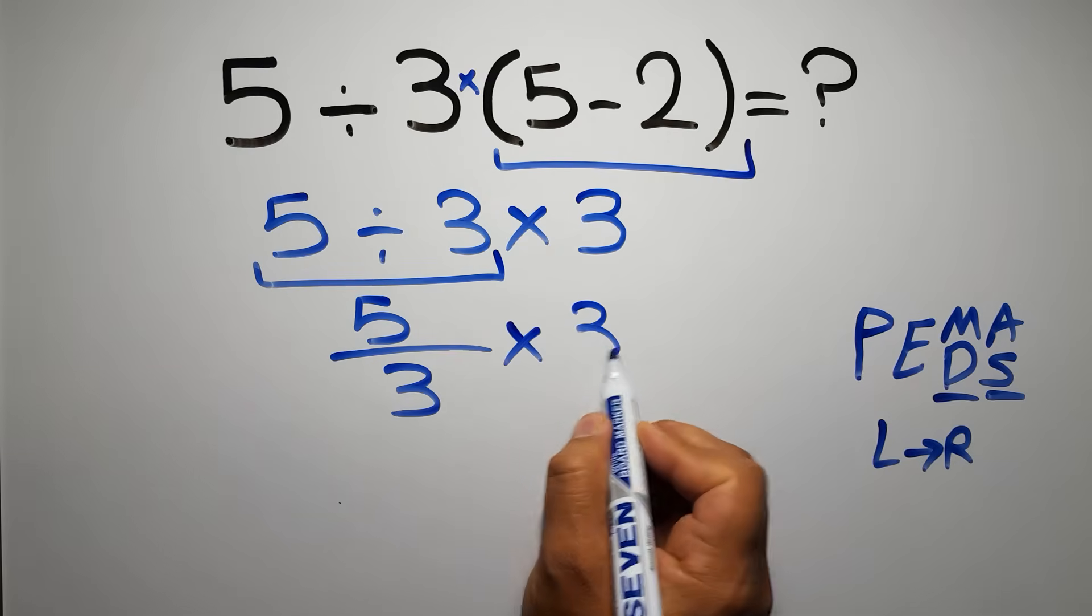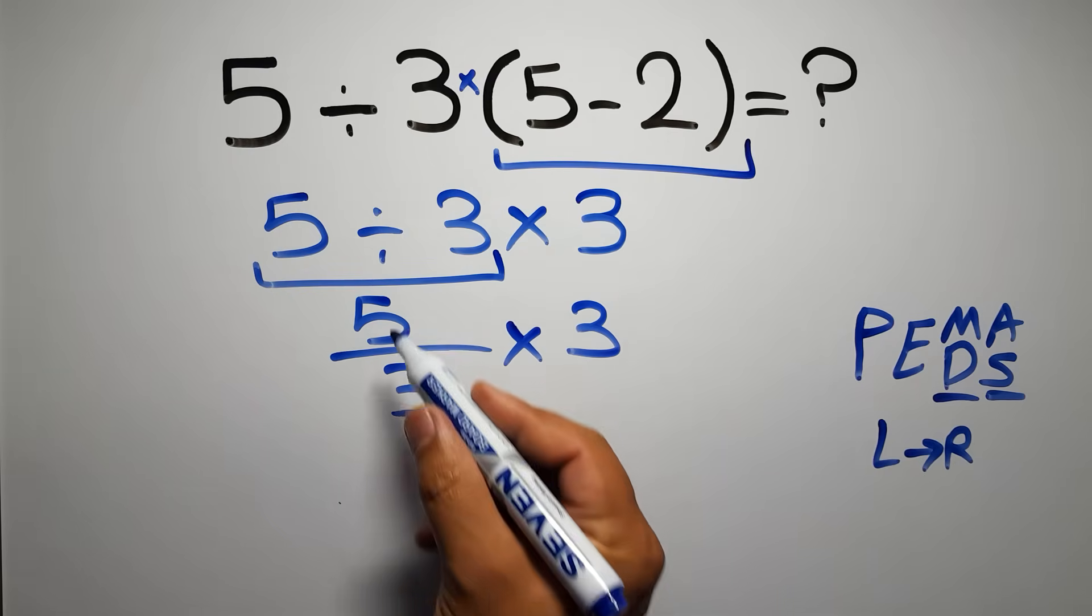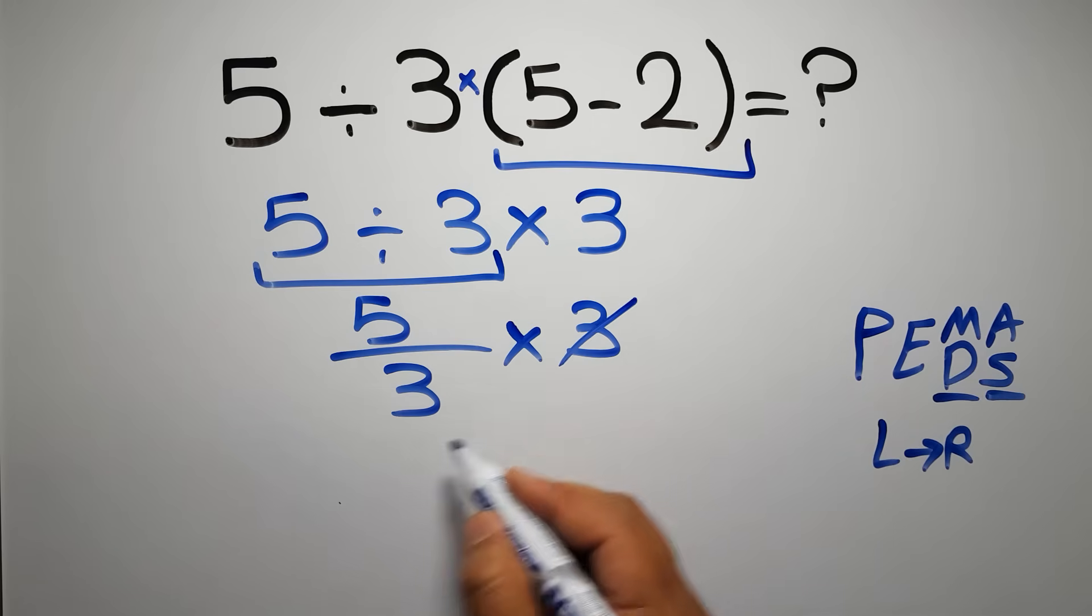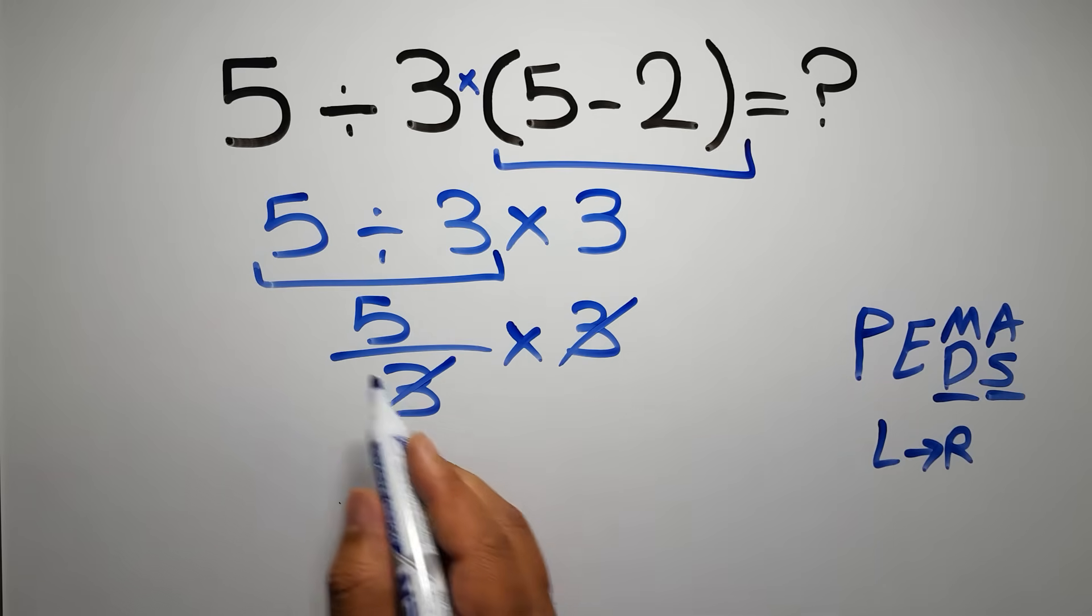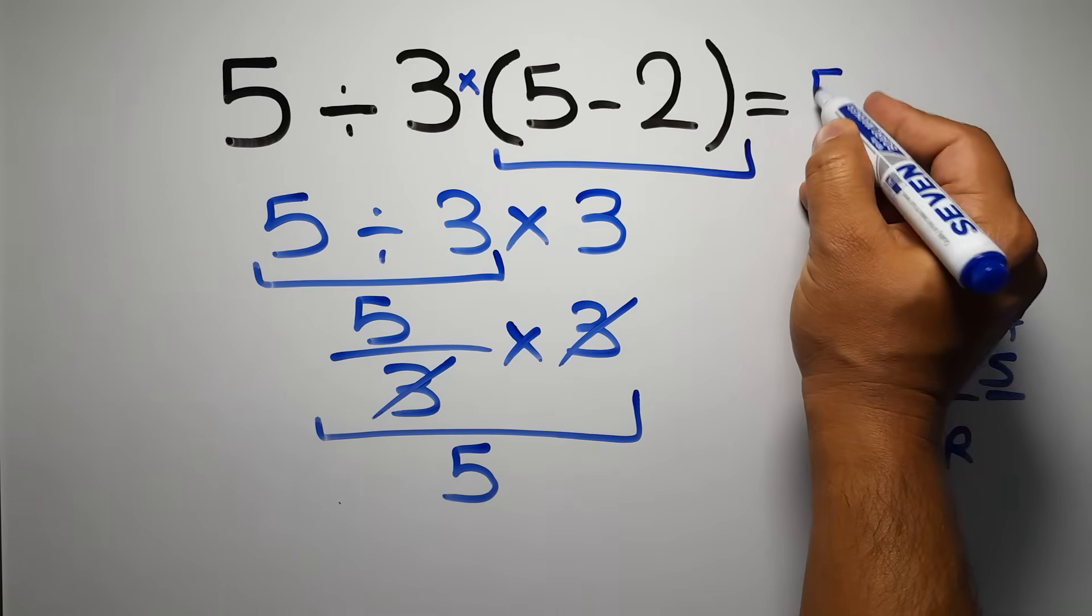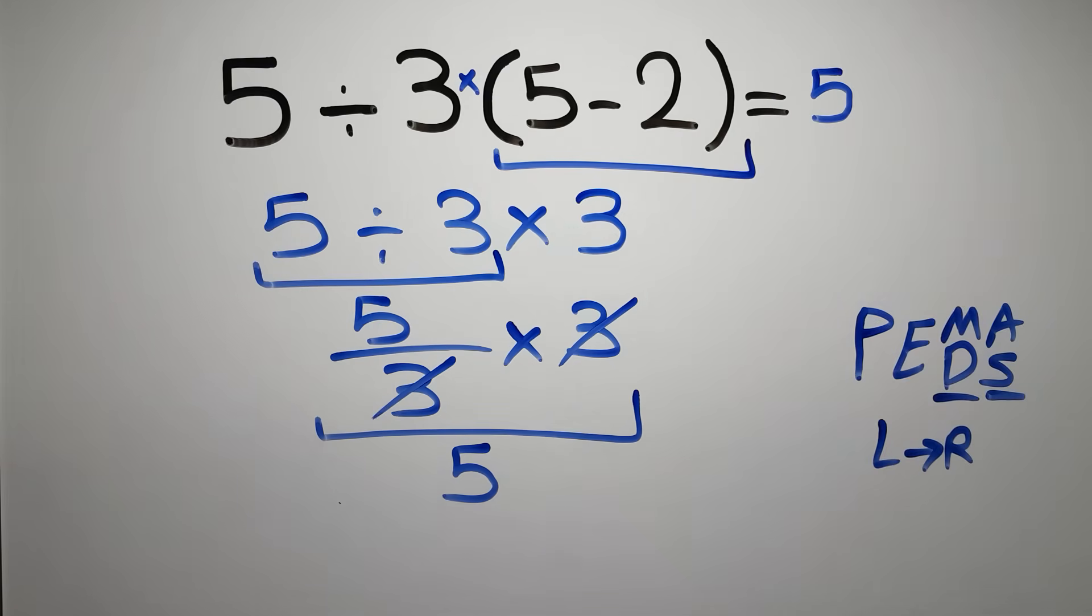So 5/3 times 3. We can easily cancel this 3 and this 3, so we have just 5, and this is our final answer to this problem. The correct answer is 5.